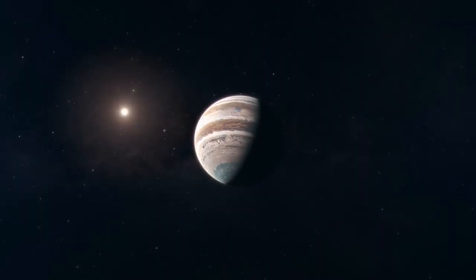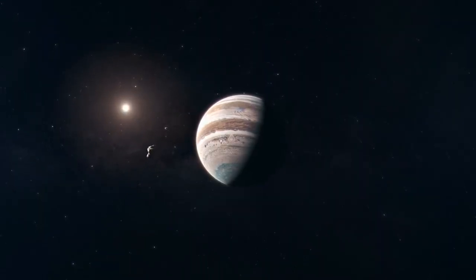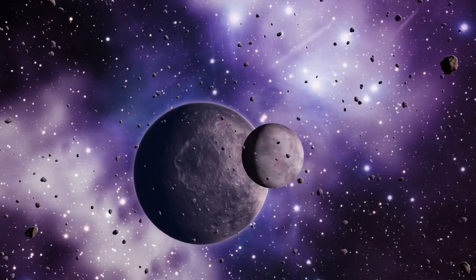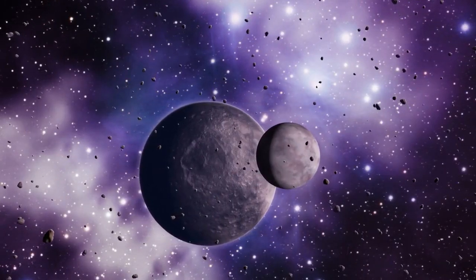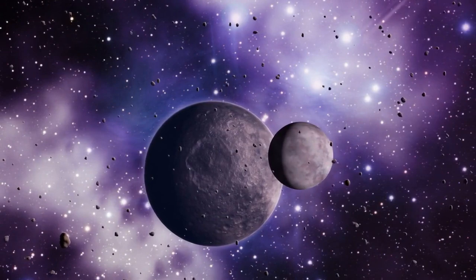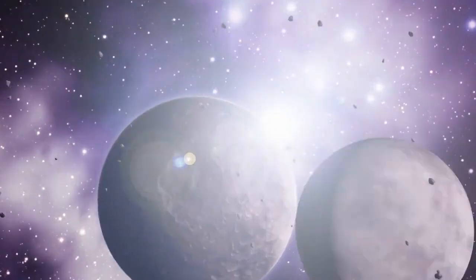Imagine a rogue planet the size of Jupiter entering the outskirts of our solar system. Its immense gravitational pull could disrupt the orbits of outer planets like Neptune and Uranus. Over time, these disruptions could ripple inward, causing instability in the orbits of Earth and other inner planets.